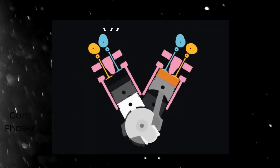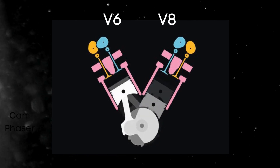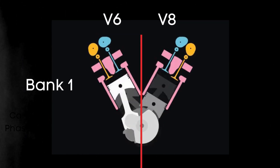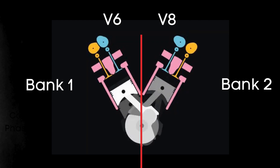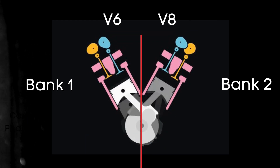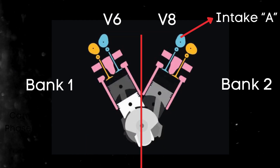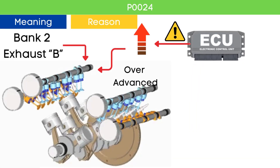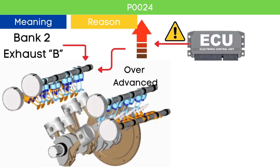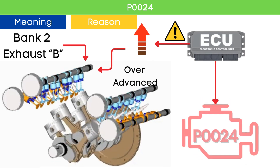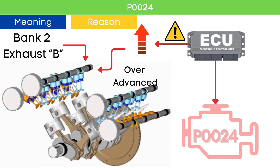In the case of V6 or V8 engines, there are two camshafts — bank 1 and bank 2. For dual overhead camshaft (DOHC) engines, there are two camshafts per bank: intake and exhaust. When the ECU detects that the bank 2 exhaust camshaft position is over-advanced compared to the targeted cam angle, it triggers the P0024 code.